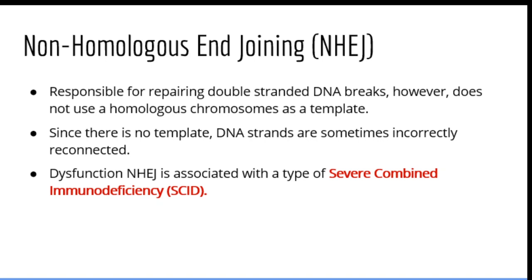This brings us to the last DNA repair mechanism: non-homologous end-joining. Like homologous recombination, non-homologous end-joining repairs double-stranded DNA breaks. Unlike homologous recombination, it does not require a homologous chromosome as a template. However, the result is that occasionally non-homologous end-joining will reconnect DNA strands incorrectly, leading to structural mutations such as translocations, deletions, and inversions — because without a homologous template, DNA breaks are sometimes randomly reconnected in incorrect ways.